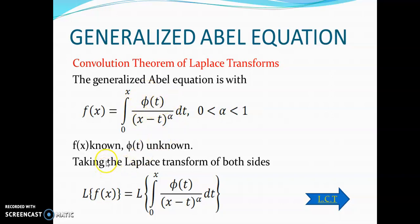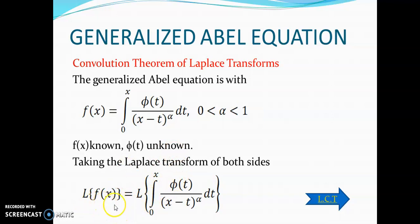In order to find the value of φ(t), we will take the Laplace transform on both sides of the equation. We get: Laplace transform of f(x) equals Laplace transform of the integral from 0 to x of φ(t) divided by (x minus t)^α dt.